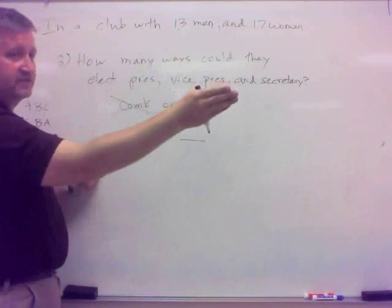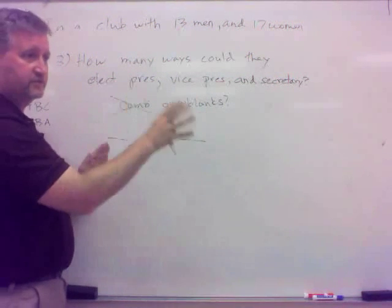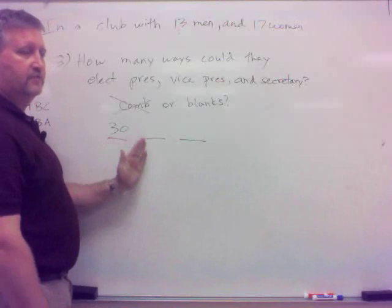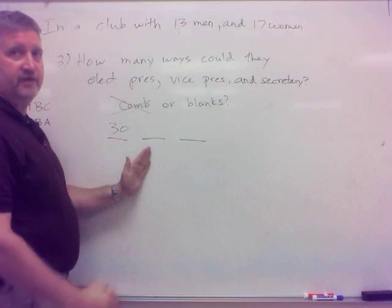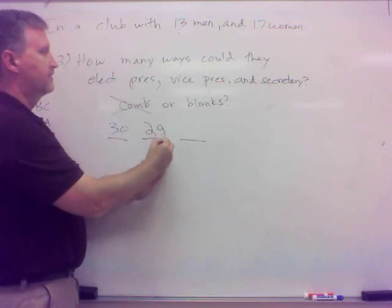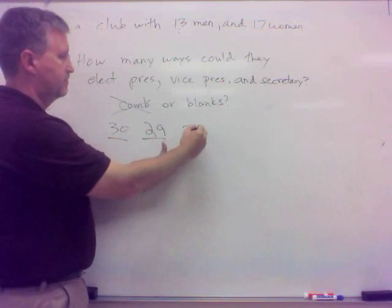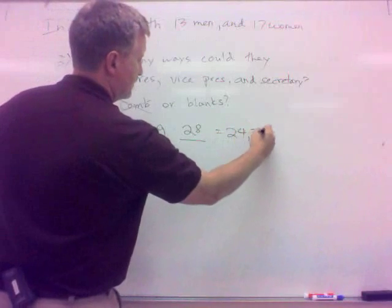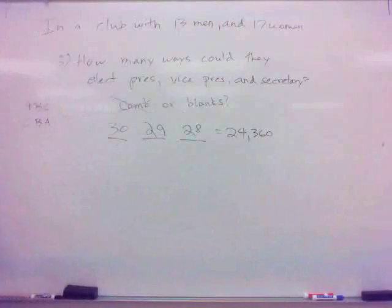Okay. Alright. So if I use the blanks, how many ways could I choose the president? We've got 13 men, 17 women. Any of those could be president, right? There's no specification which is president, which is vice. 30 ways. 30 ways. What about this vice president? Well, I can't use very well the same president, so 29. And then I have to go 28. Multiply those together. See? 24,360.